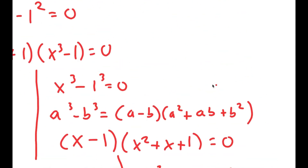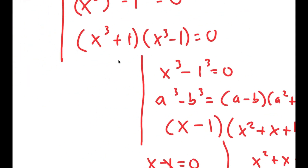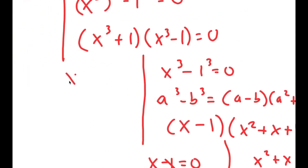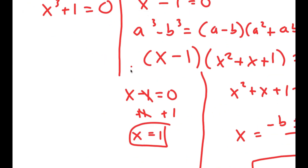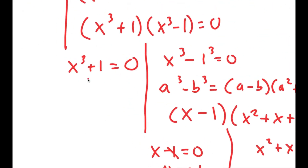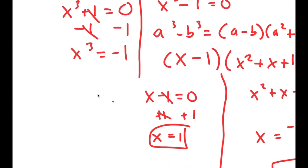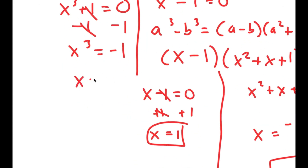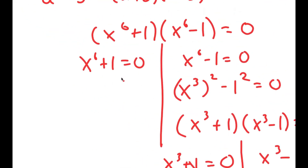We also have to solve the remaining equations. So now I have x to the power of 3 plus 1 is equal to 0. I'm going to subtract 1 on both sides, so I get x to the power of 3 is equal to negative 1, meaning x is also equal to negative 1. So this is another solution.